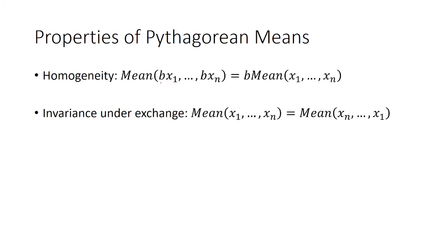The second property is invariance under exchange. That means if I take the mean of numbers that are in different order, I'm still going to get the same result. It doesn't matter the order because addition and multiplication are commutative.